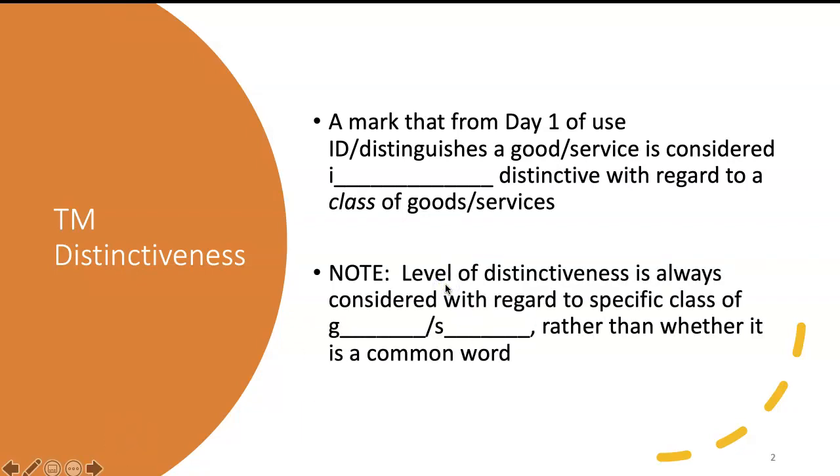Now, importantly, levels of distinctiveness are considered with regard to a specific class of goods or services rather than whether it's a common word. For example, Apple is a common word, but when used regarding computers, it can serve as a trademark because people aren't thinking that it's describing computers, but rather the brand name for a company called Apple.